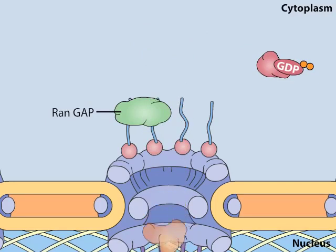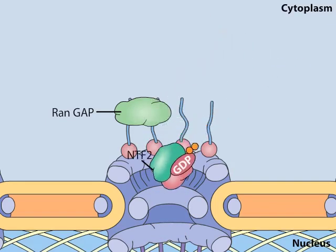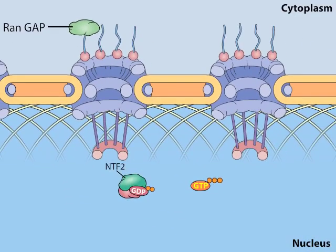In an action that prevents the depletion of RAN from the nucleus, the RAN-GDP formed in the cytoplasm is transported back to the nucleus by its own import receptor, a protein called NTF2.